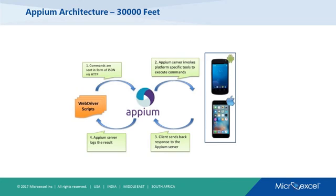Here is how Appium works: you use Eclipse to write your WebDriver scripts — whether Selenium or Appium WebDriver scripts. When you start an Appium server, the Appium server sends your commands from the WebDriver scripts to your mobile phone — iOS or Android. When it executes commands on those devices, whatever response is generated is sent back to your WebDriver scripts, and you can capture the results.